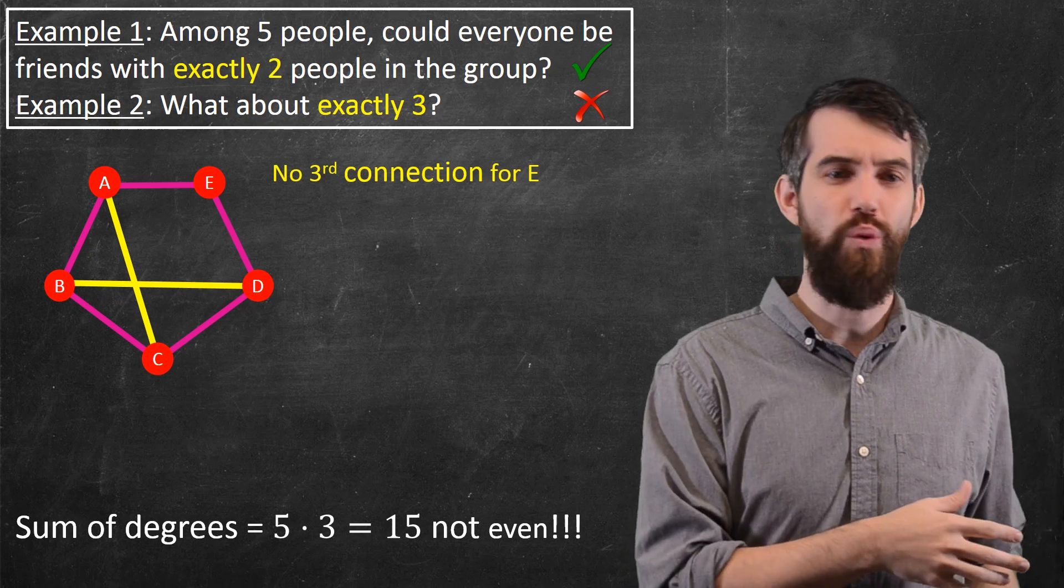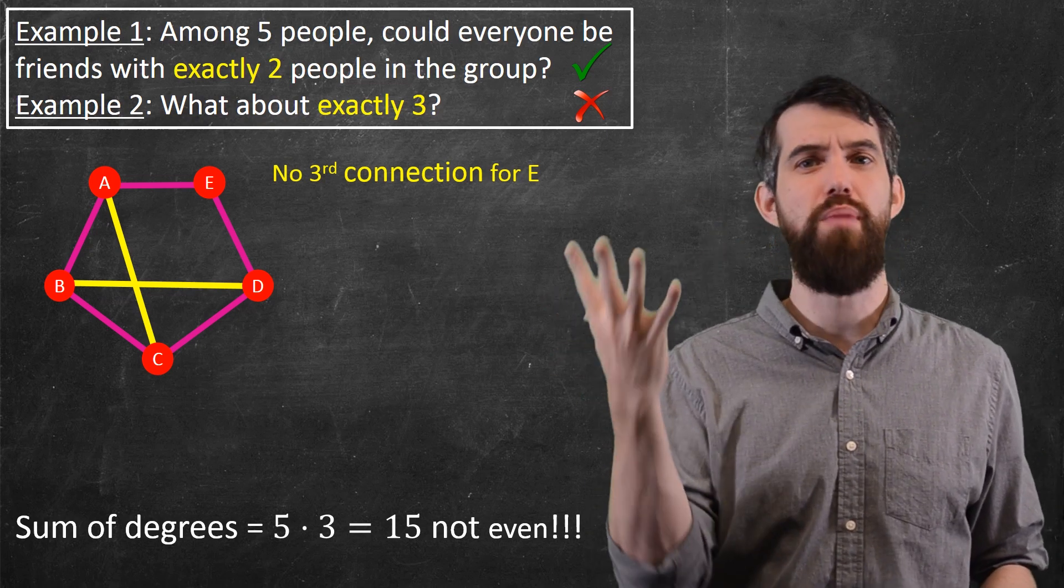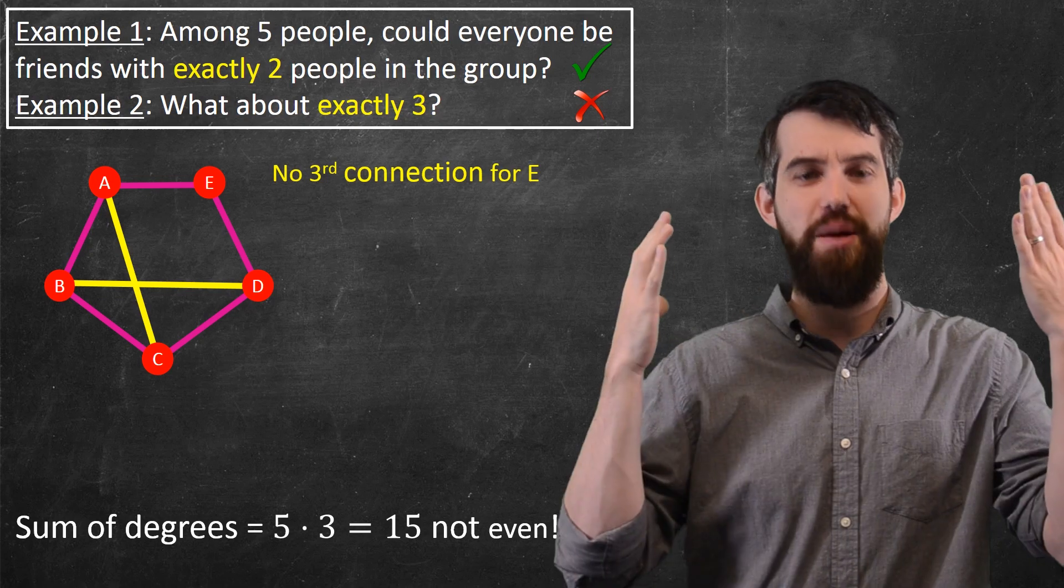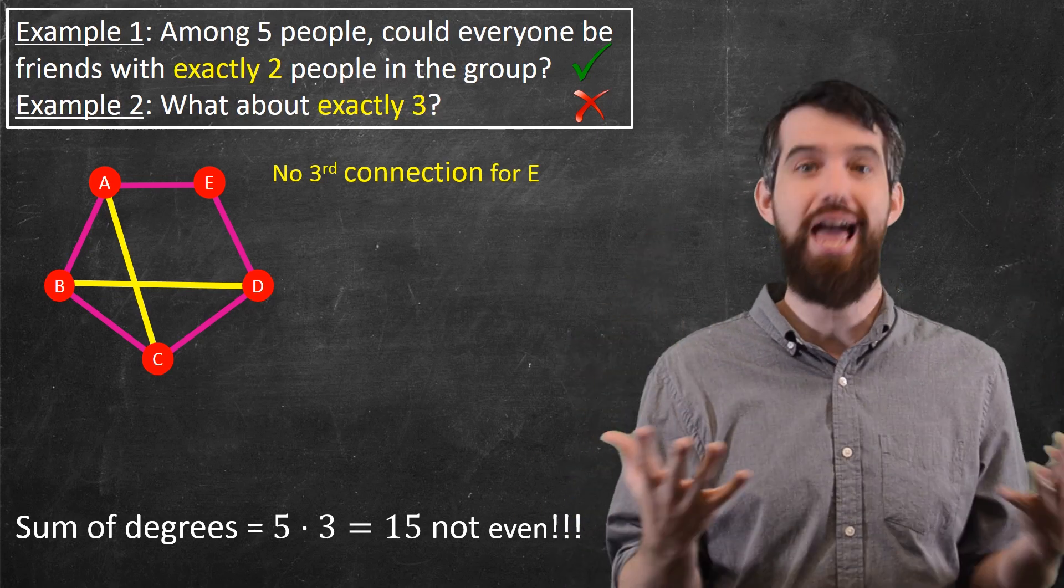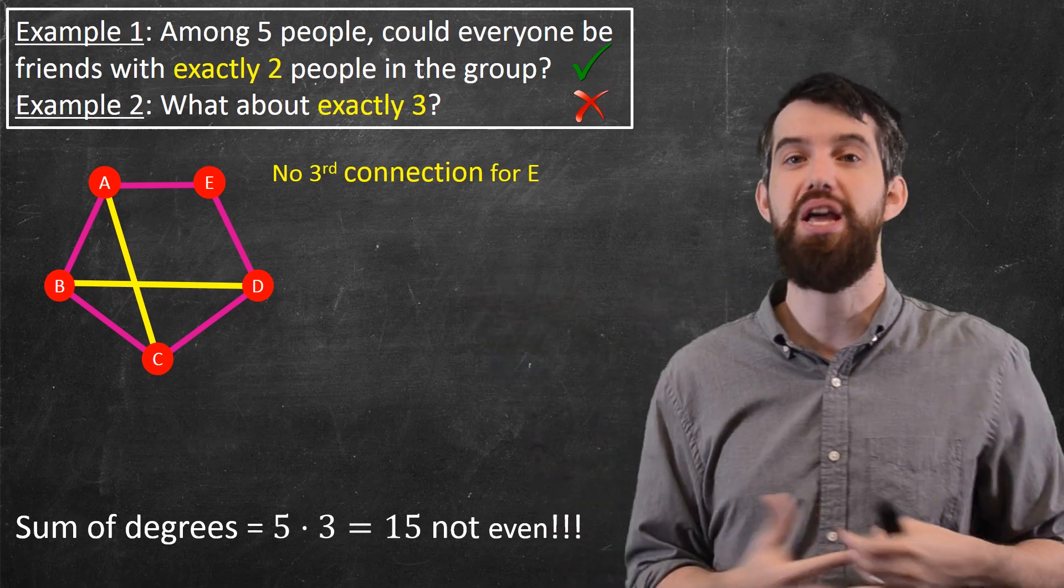And then, thinking back to example one, where you had the five people, but you were multiplying by two connections for each people. That was a number 10, and that did not violate our condition. The sum of the degrees was 10. That was perfectly fine. And indeed, we were able to come up with such a graph.